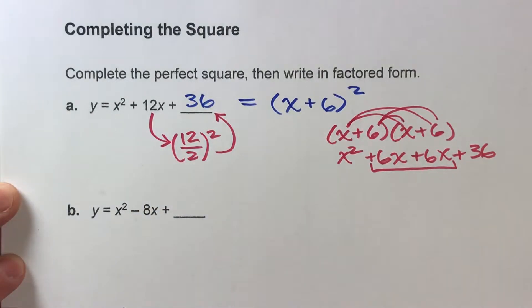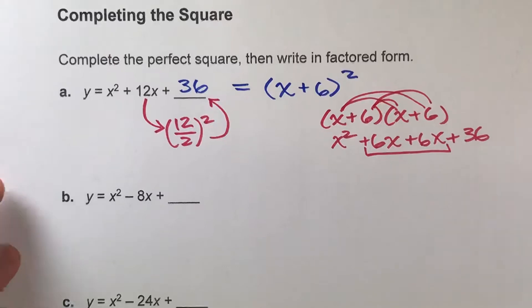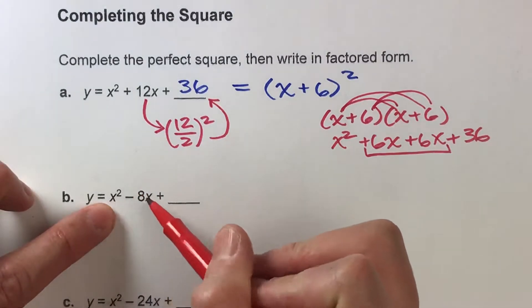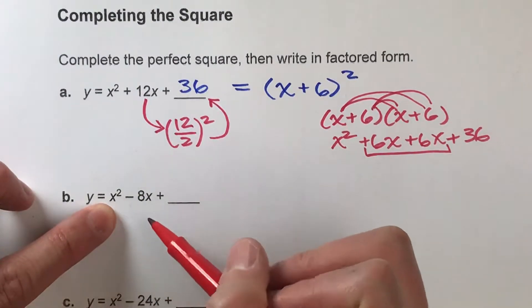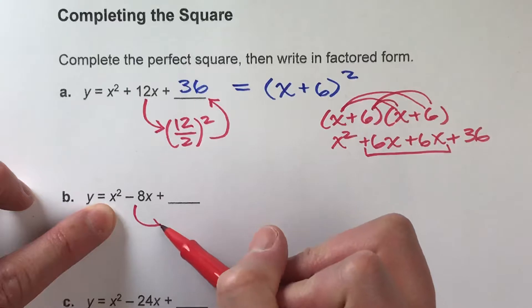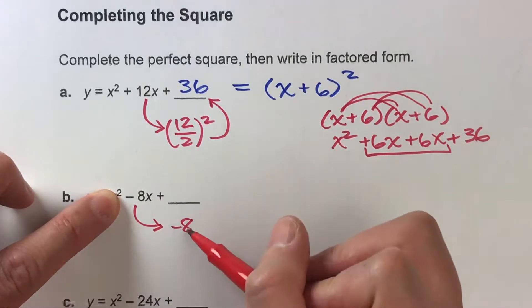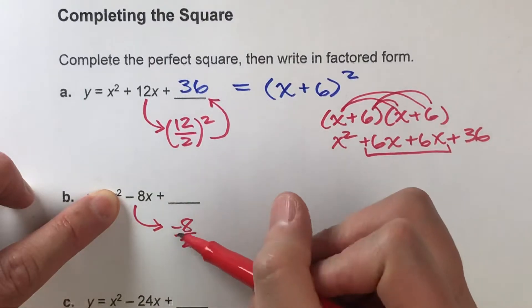Okay, let's do another one so you can see this in action one more time. Alright, so y equals x squared minus 8x plus something. Now notice, the number next to x in this case is negative 8, but that doesn't change the formula. We take that number, negative 8, divide it by 2, and then square it.